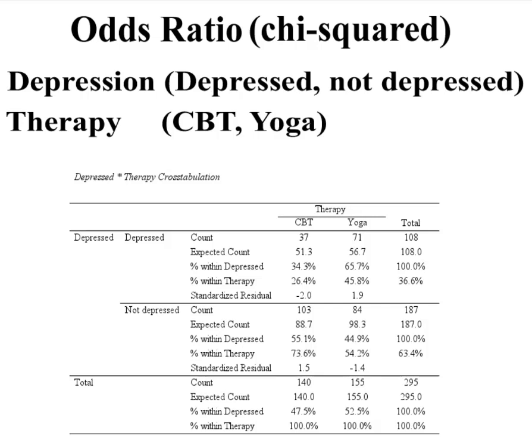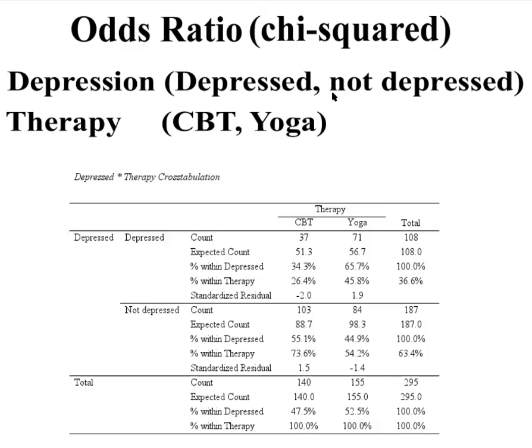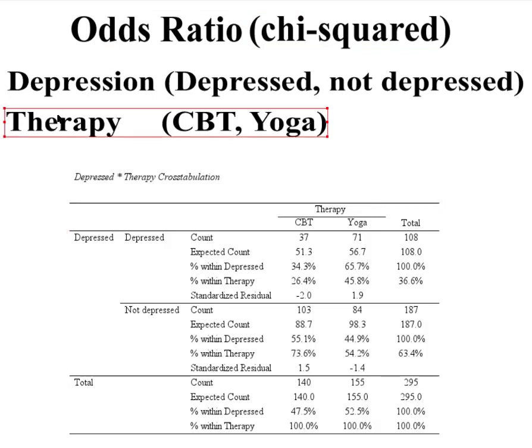That's how it works in logistic regression and it's basically the same mathematics here. We're going to look at the odds ratio of people who are depressed or not and which kind of therapy they're using — CBT or yoga.